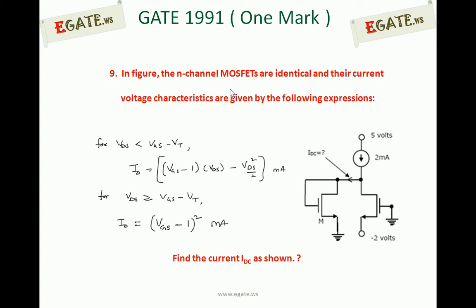Look at the diagram — it consists of two N-channel MOSFETs. The N-channel MOSFETs are identical and their current-voltage characteristics are given by the following expressions. For VDS less than VGS minus VT: ID = (VGS − 1)·VDS − VDS²/2 mA. For VDS greater than or equal to VGS minus VT: ID = (VGS − 1)² mA.